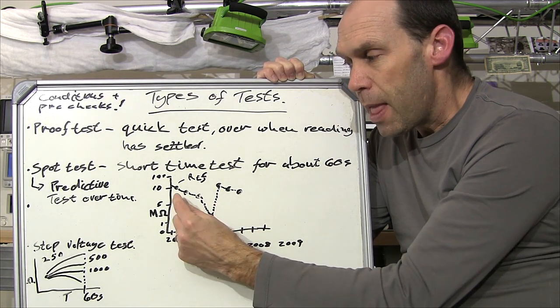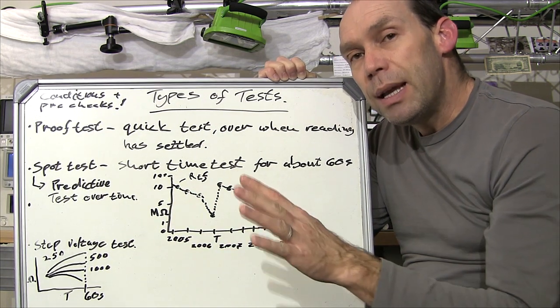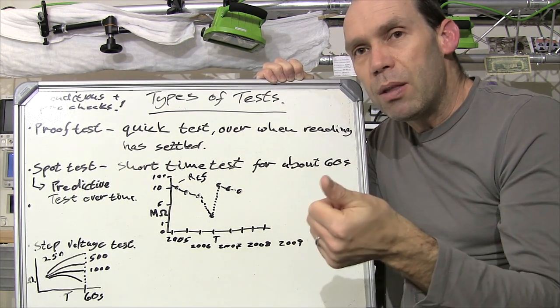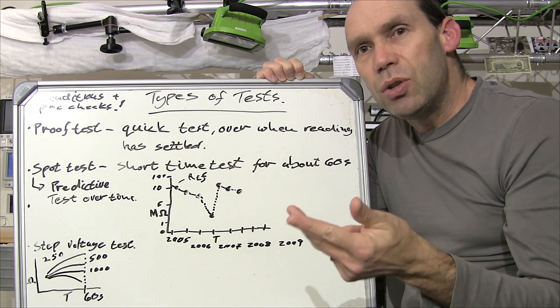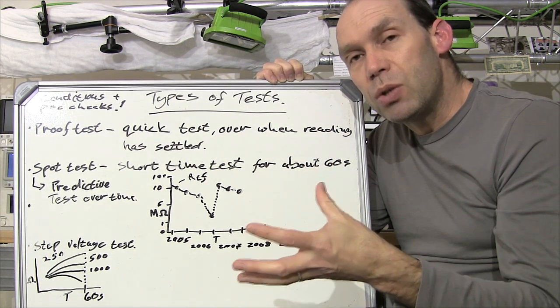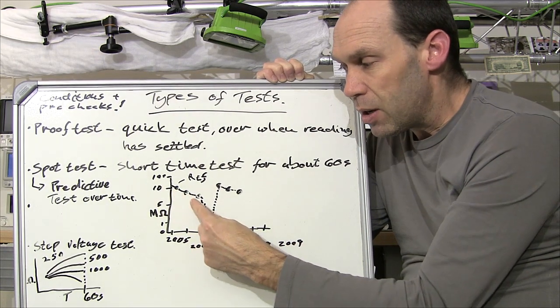Then in 2006 you'd do it again and potentially you might get a slightly lower reading. Then you'd go in 2007 and you might see a trend which would indicate because over time potentially because of either moisture, ingress, dirt, oil or the degrading of the insulation in the motor itself that your readings are going to go down.